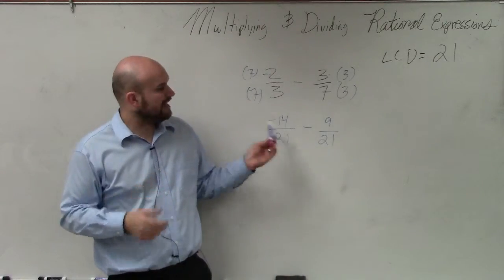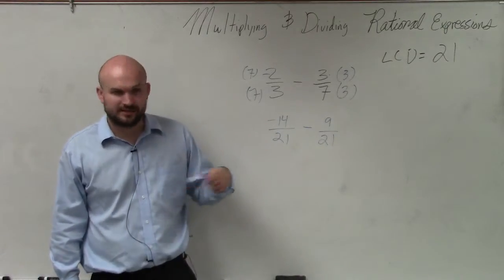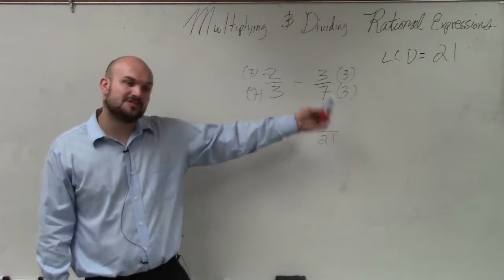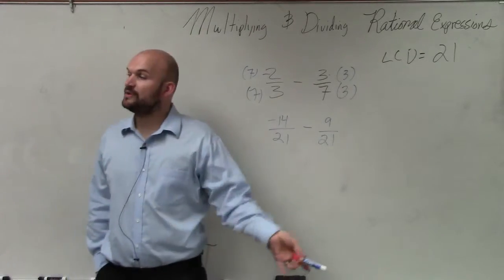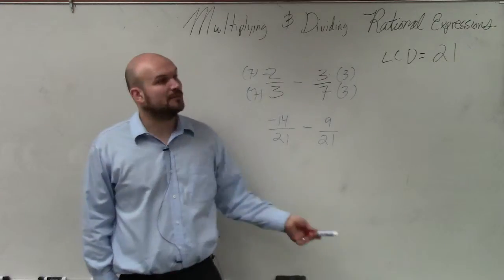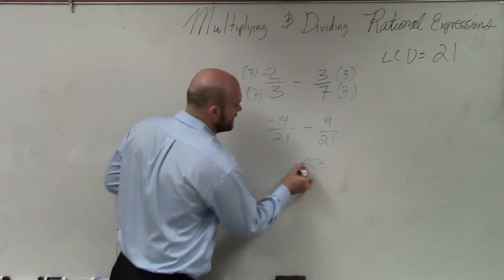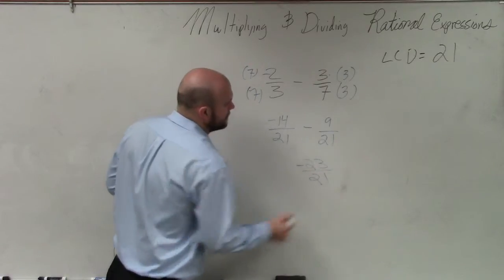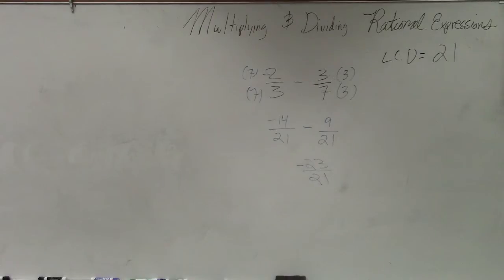So now we have common denominators. So when we're combining common denominators, adding or subtracting, we keep the common denominator and just apply the operation to the numerator. So this is saying negative 14 minus 9. If you owe me $14 and you borrow 9 more dollars, you now owe me $23. So our final answer is negative 23 over 21.